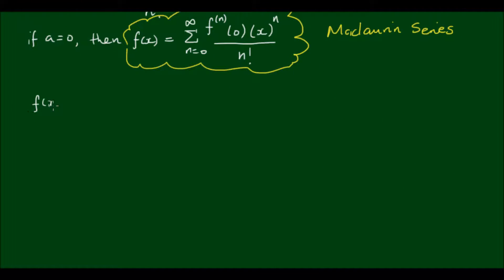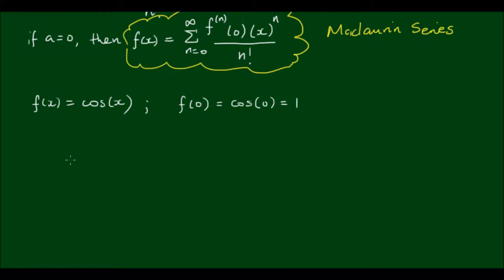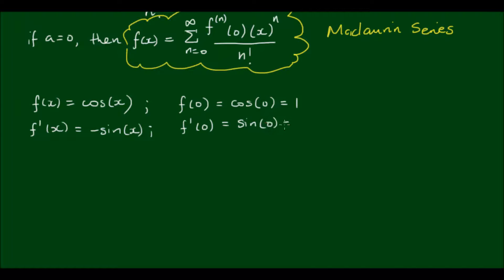Let's use the Maclaurin series to represent the cosine of x as the sum of an infinite series. So f(x) equals cos(x). The first term in our Maclaurin series is f(0), so cos(0) equals 1. The second term is the first derivative — cos differentiates to negative sine — and this means the first derivative at the point 0 is sine of 0, which equals 0.